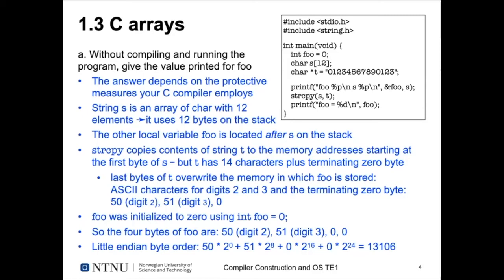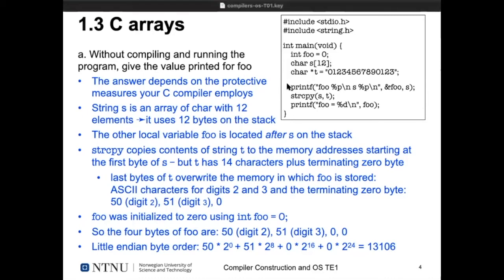`s[12]` stores 12 characters including the terminating zero, so you can only have 11 letters. The four bytes where `foo` is stored are overwritten. The last two bytes of the character string are the ASCII characters for digits '2' and '3', which overwrite the first two bytes of `foo`. Then there is a terminating zero, and the last byte of `foo` remains zero because we initialized it to zero. Digit '2' has decimal ASCII value 50, digit '3' has value 51, and zero is zero.